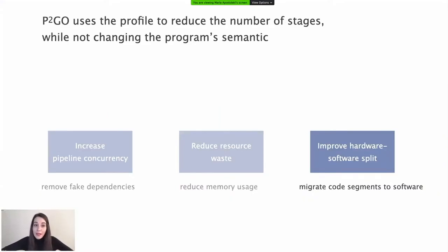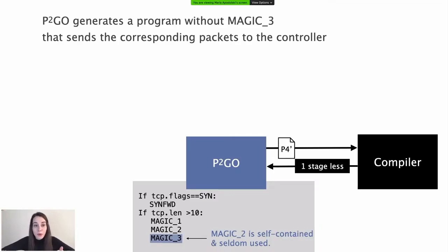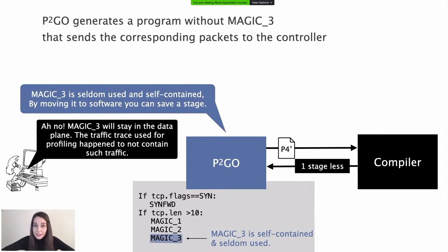The last optimization P2Go applies is migrating code to software. P2Go first finds the least used tables in the profile and verifies they are self-contained — meaning no other table depends on their computation and vice versa. In this case, Magic Table 3 is a suitable candidate. P2Go generates a program without Magic Table 3 that instructs the corresponding packets to be forwarded to the controller. P2Go suggests the edit to the programmer with the profile-based observation that Magic 3 was very seldom used and self-contained. However, the programmer refuses and insists that Magic 3 should stay in the data plane.